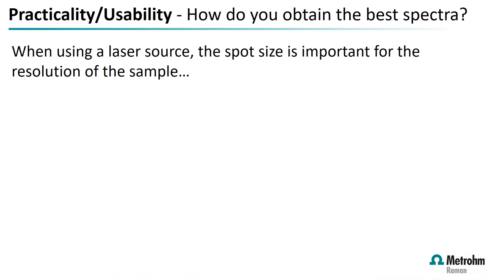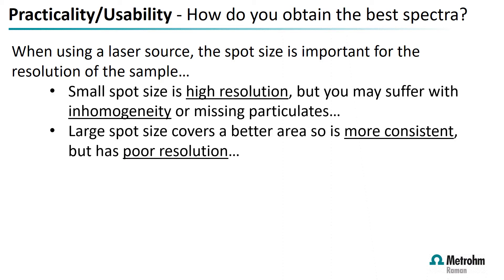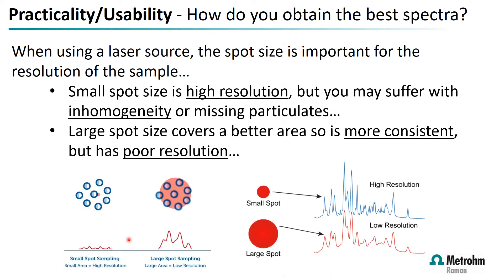Practicality and usability — how do you obtain the best spectra? When using Raman, the laser spot size is important for the resolution of the sample. A small spot size gives very high resolution, but you may suffer from inhomogeneity or miss particulates — especially in mixed powders or granular samples — where the small spot size can occasionally miss areas of interest.